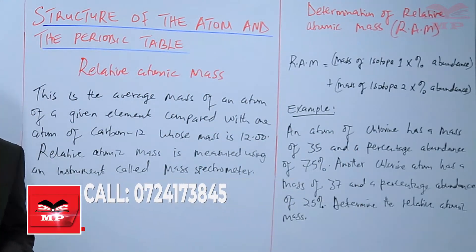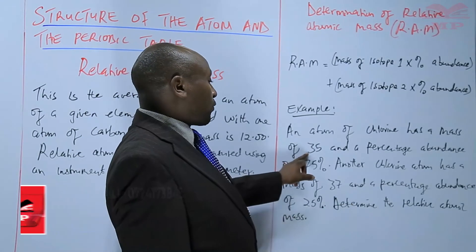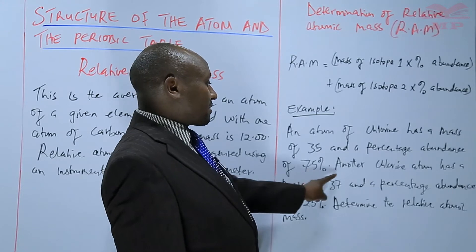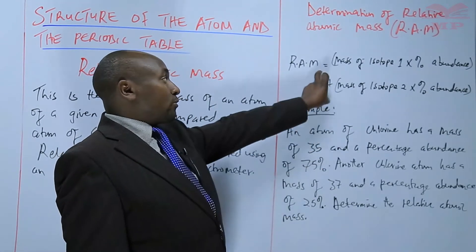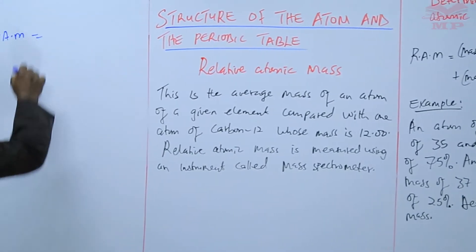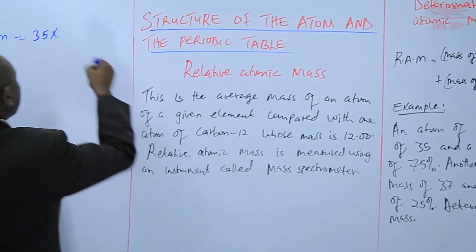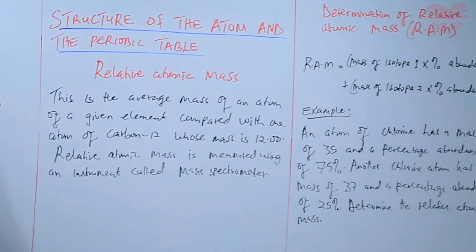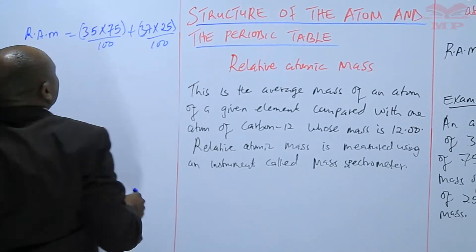So, we are given an example there whereby we are required to use the formula that is given. An atom of chlorine has a mass of 35. That is the mass of one atom. The percentage abundance is 75 percent. That is the mass of isotope 1 times the percentage abundance. Another chlorine atom has a mass of 37 and a percentage abundance of 25 percent. Then, you are supposed to use the formula to determine the relative atomic mass. So, we will say that R.A.M. is equals to the mass of isotope 1 which is 35 times its percentage abundance is 75 percent, 75 over 100 plus the mass of isotope 2 is 37 times the percentage abundance is 25 over 100.